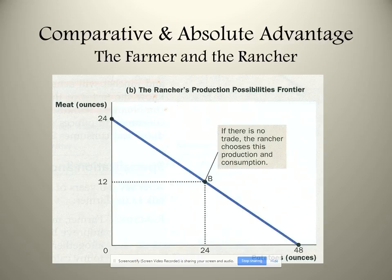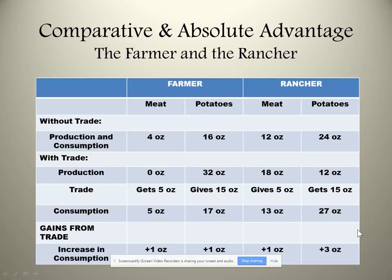The farmer says, 'I don't understand — you're better at both, so how can trading help us?' The rancher says, 'I've got a chart. Without trade, you're doing 4 ounces of meat and 16 of potatoes, and I'm doing 12 and 24. Here's what I'm proposing: you do zero meat and your full 32 ounces of potatoes. I'll increase to 18 ounces of meat and cut back on potatoes to 12.'